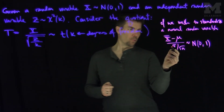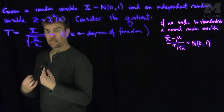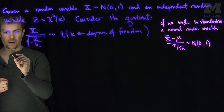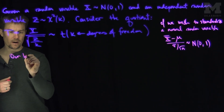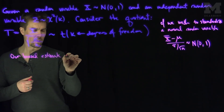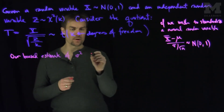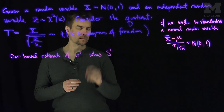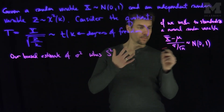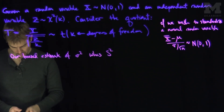Often we do not know what sigma is — the population variance. So what is our unbiased estimate of sigma squared? Recall that our unbiased estimate of sigma squared was s squared. So what we want to do is replace sigma with s and consider what this distribution looks like.